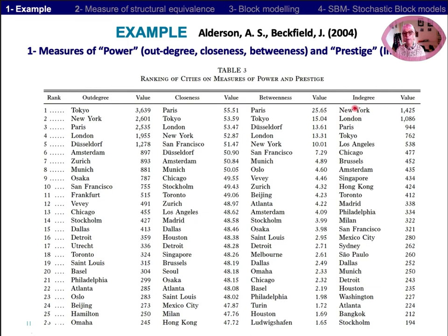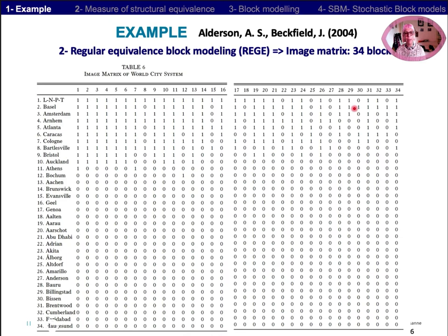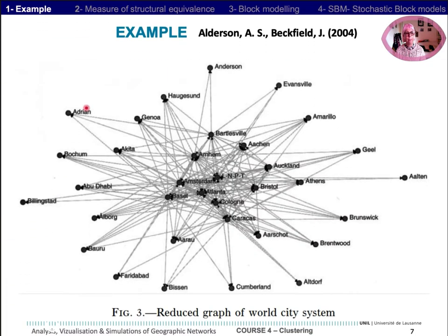They apply block modeling to the full matrix and create 34 blocks. The blocks are represented by the first city of the block in alphabetical order. The first block is London, New York, Paris, and Tokyo. The graphic representation of the image matrix underlines a core-periphery model, with London, New York, Paris, and Tokyo at the core of the system.